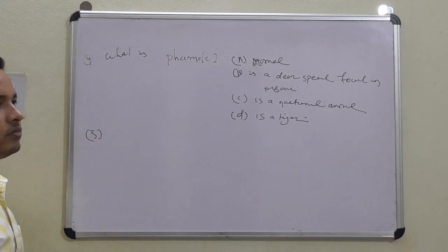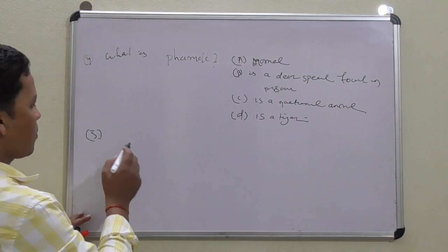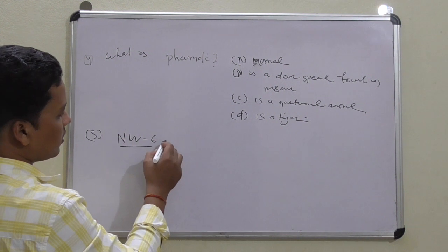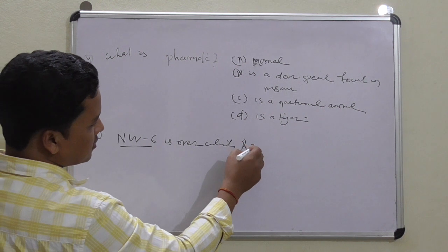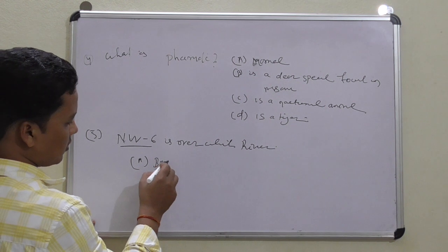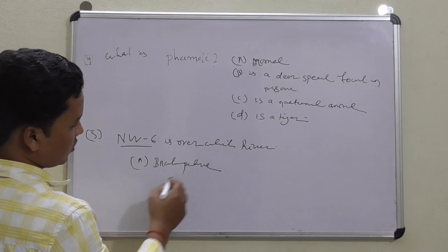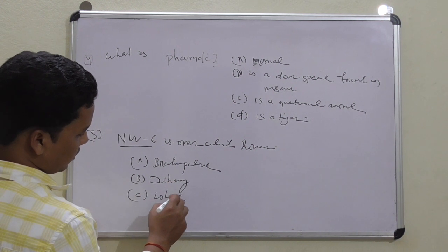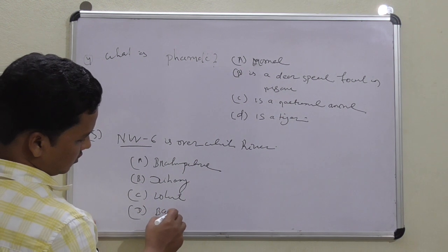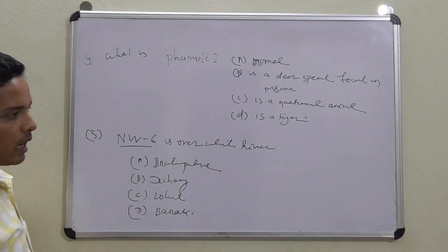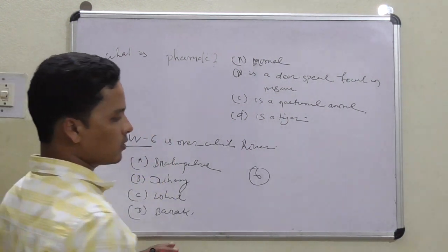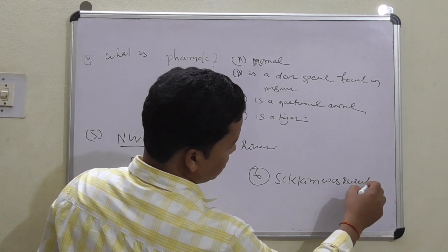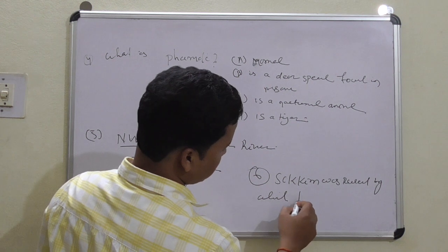Last question: National Waterway 6 is over which river? Option A: Brahmaputra. Option B: Dhansiri. Option C: Lohit. Option D: Barak. Question six: Sikkim was ruled by which tribes? These are the six questions given to you.